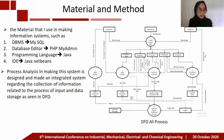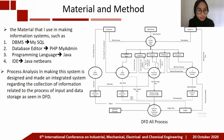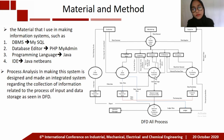Next is materials and methods. In this section I will explain the information system used in this research. The materials I used in making the information system are: DBMS — I use MySQL; database editor — I use phpMyAdmin; programming language — I use Java; and IDE — I use Java NetBeans. The system was designed and made as an integrated system for the collection of information related to the process of input and data storage, as seen in the DFD. This is a picture of the DFD for all processes.